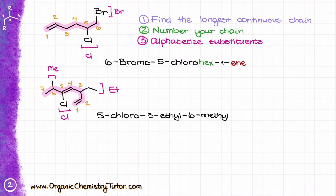My parent has seven carbons, so the root is hept. Since I have two double bonds, it's going to be heptadiene — I add the letter A for better sound. My double bonds are at positions one and four. I number by where the double bond begins, so one double bond begins at carbon one and the other at carbon four. With two double bonds I say di, giving the full name: 5-chloro-3-ethyl-6-methyl-hepta-1,4-diene.